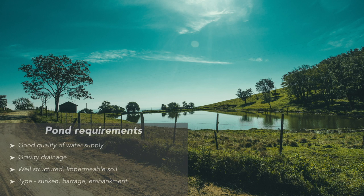To build a pond, the location should have a good quality water supply and preferably gravity drainage to minimise construction and operating costs. The soil is also important — it must be impermeable to hold water, and at the same time well-structured with organic matter to support the pond ecosystem and provide natural feed for the organisms reared inside.